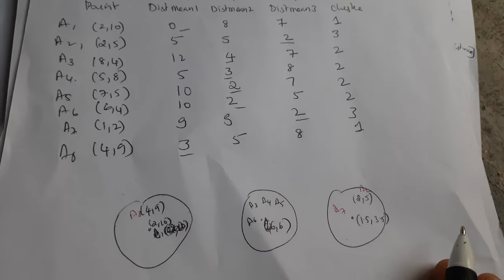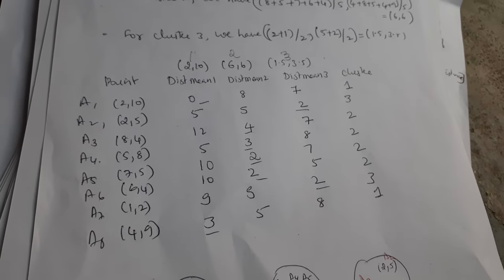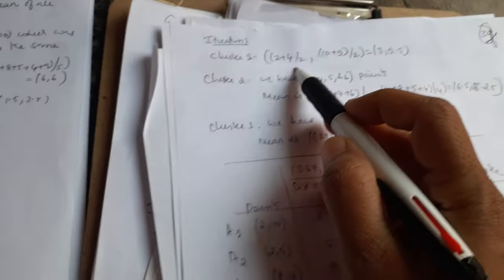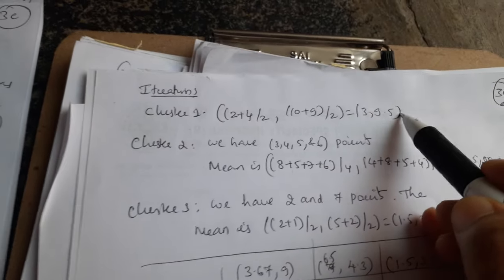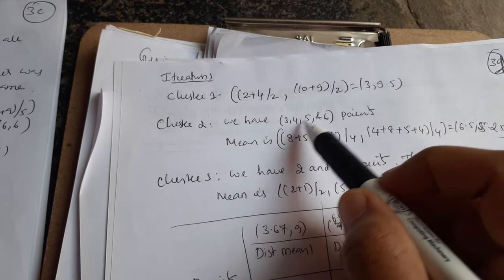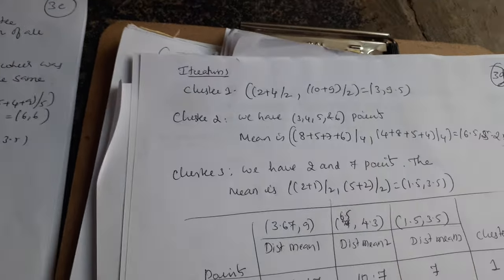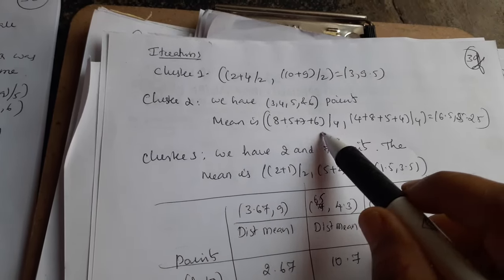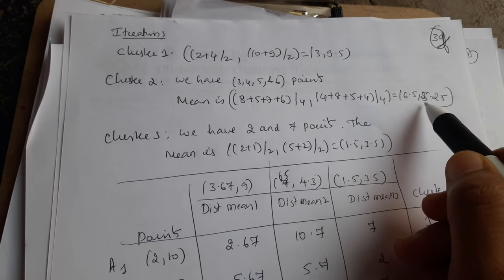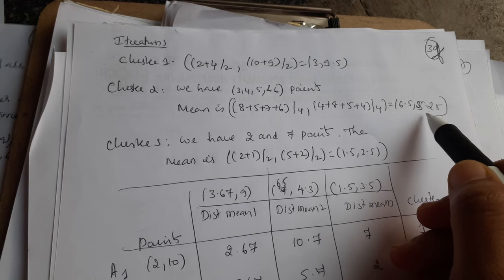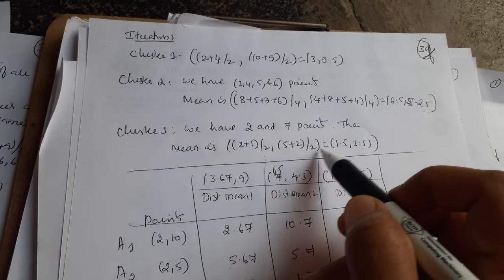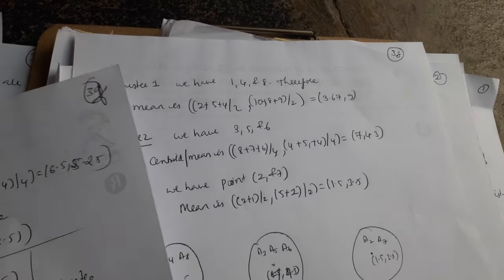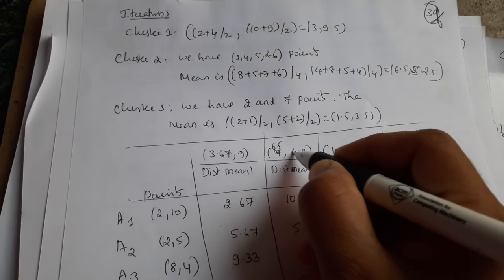Again we recalculate the mean for all clusters. Cluster 1 now has two data points, so the mean is x = (4+2)/2 = 3 and y = (9+10)/2 = 9.5. For cluster 2, which has data points A3, A4, A5, A6, the mean gives x = 6.5 and y = 5.25. For cluster 3, with data points A2 and A7, the mean remains (1.5, 3.5).